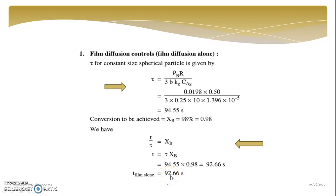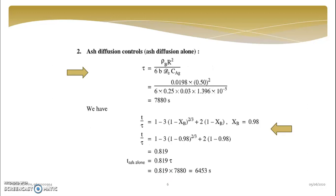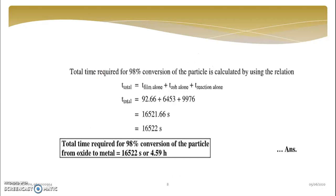Previously T of ash alone, and then previously T of film alone. Now what we will do: as we have to calculate time required for 98% conversion, if we consider all the resistances, so your total time will be individual times: 92.66, 6453 and 9976.